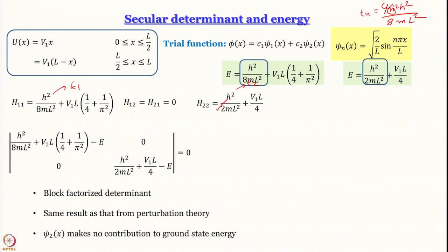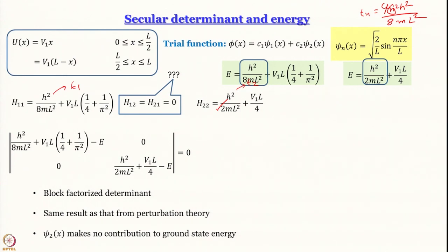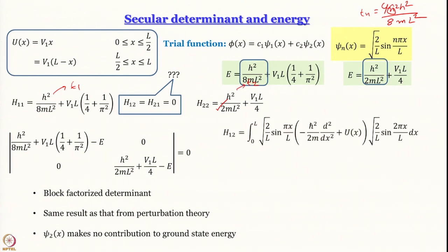An important observation: ψ₂ makes no contribution to the ground state energy because h₁₂ = h₂₁ = 0. Now we must explain why this is so. We write H₁₂ as an integral from 0 to L using the general U(x), which can be split into two terms — the kinetic and potential parts.